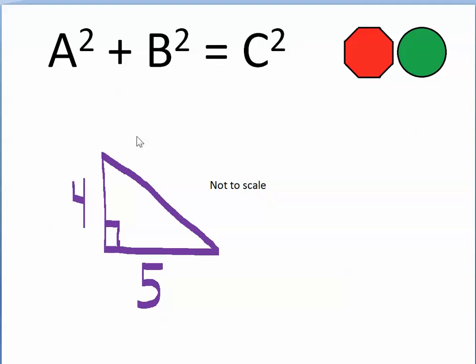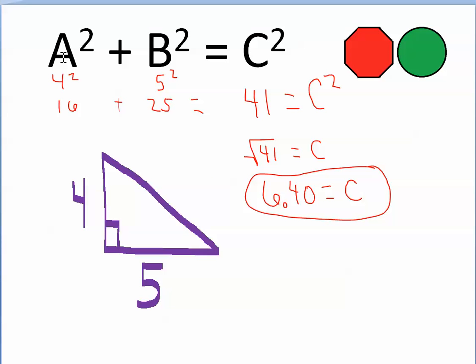Give this one a whirl. We'll call this a and this b; we don't know c. So 4 squared is 16 and 5 squared is 25. Adding 16 plus 25 gives us 41, so 41 equals c squared. Taking the square root of both sides: c equals the square root of 41, which is 6.40 correct to two decimal places.